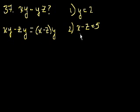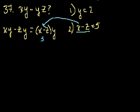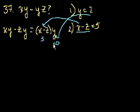We can figure out x minus z from statement number 2. x minus z is equal to 5. And we know what y is equal to from statement 1: y is equal to 2. So we can definitely figure it out as long as we have both statements. The answer is 2 times 5 is 10. But we didn't have to figure it out — we just had to know that we could. One by themselves, you wouldn't be able to solve it. So the answer is C — both statements together are sufficient, but neither alone is.